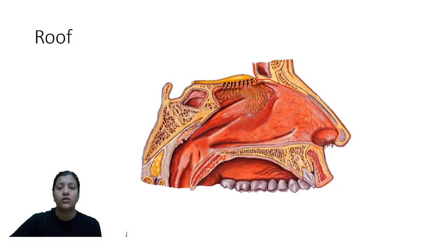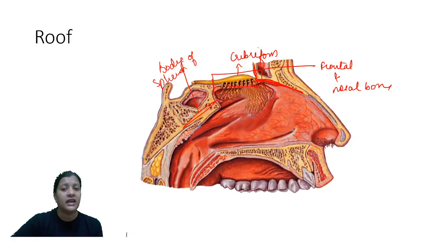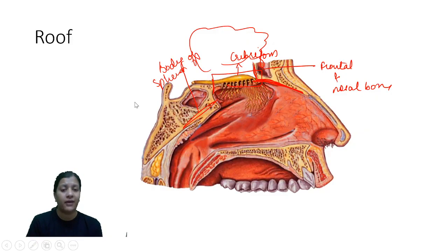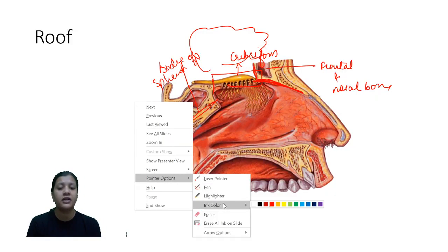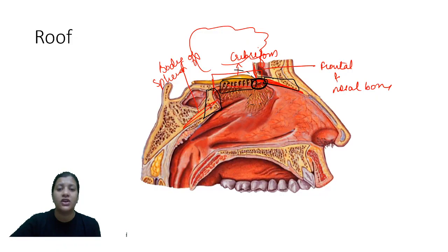The roof of the nose anteriorly is made up of frontal bone and nasal bone. In the middle it is formed by the cribriform plate of the ethmoid bone. Posteriorly it is formed by the body of the sphenoid bone. All three different bones form the roof of the nose, separating the cranial cavity from the nasal cavity. During development these bones must fuse — anteriorly and posteriorly. If there is an area of non-fusion, there will be a defect in the base of skull and herniation of cranial tissue into the nose.